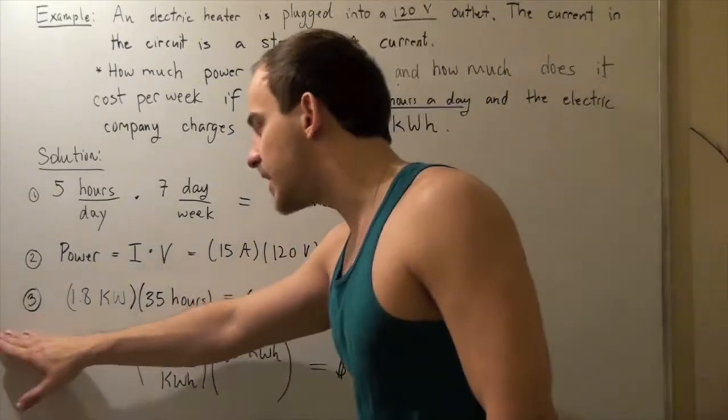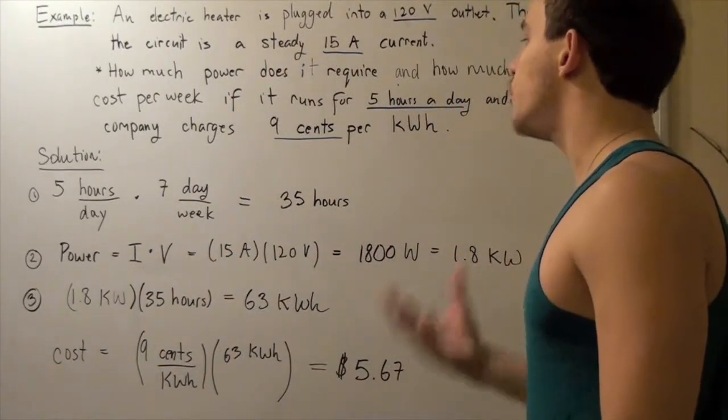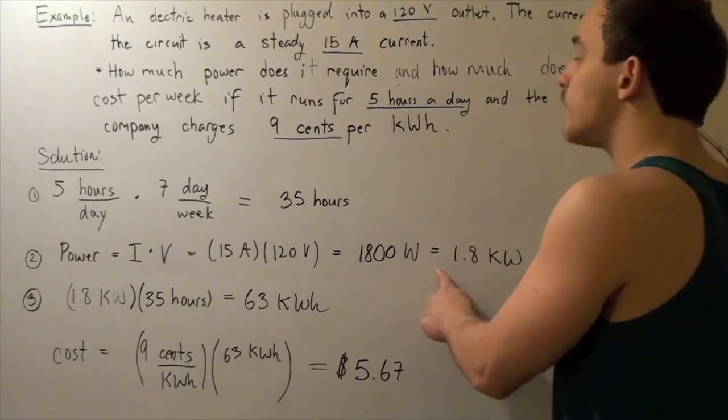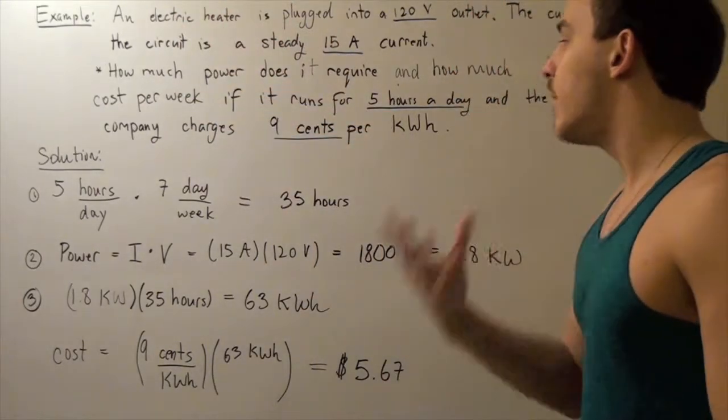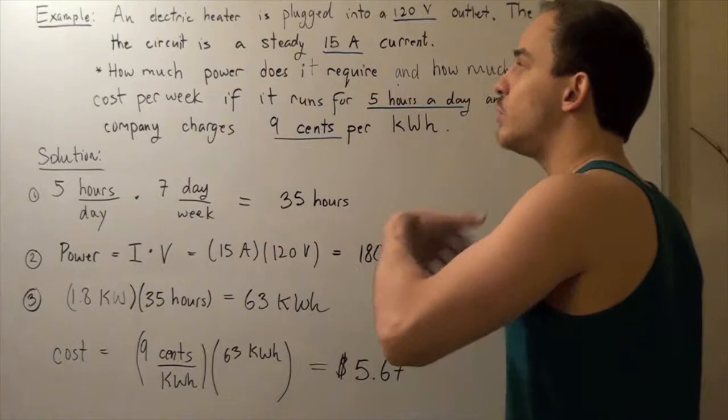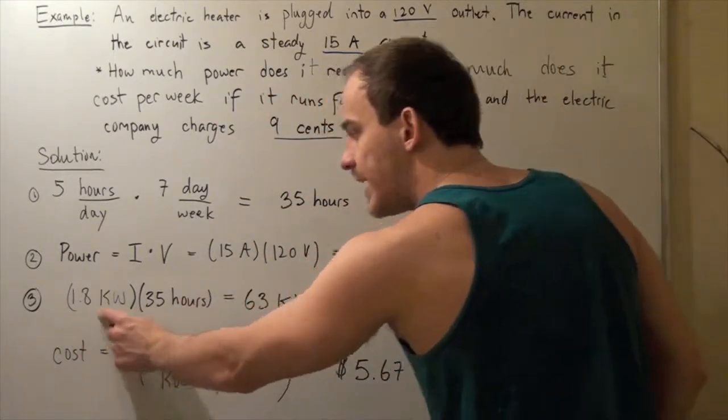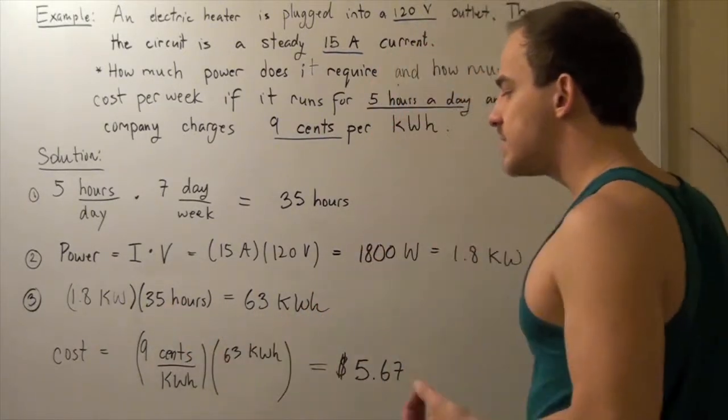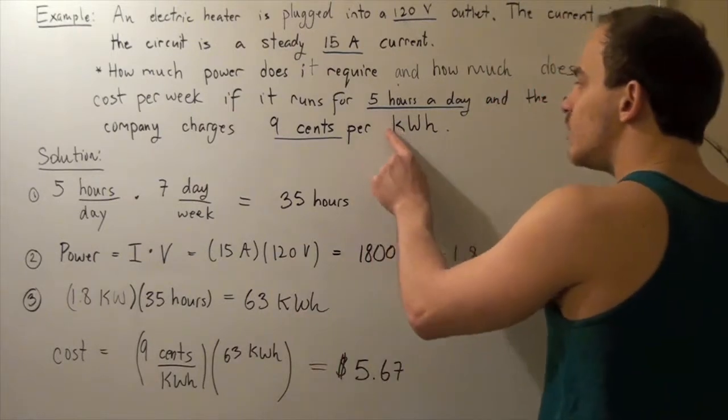In step three, we find how many kilowatt hours are used per week. We take the power required by the heater and multiply it by the hours used per week. 1.8 kilowatts multiplied by 35 hours gives us 63 kilowatt hours.